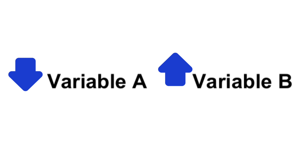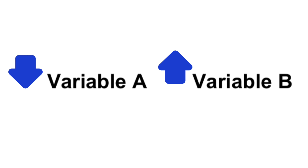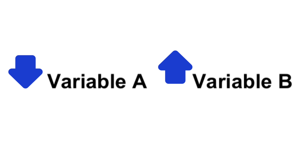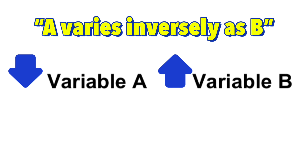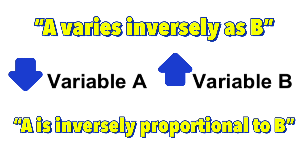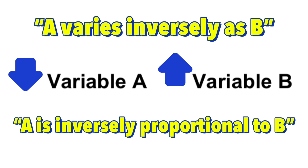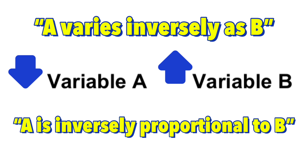Again, notice the direction of the arrow — it goes in the opposite direction, and that is what we mean by inverse variation. Whenever two variables are inversely proportional to each other, we can say that A varies inversely as B, or A is inversely proportional to B. Now let's look at some real-life examples of inverse variation.